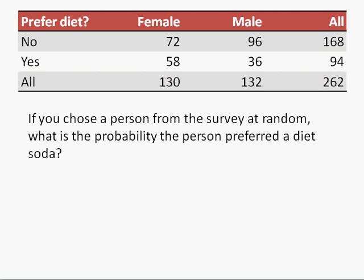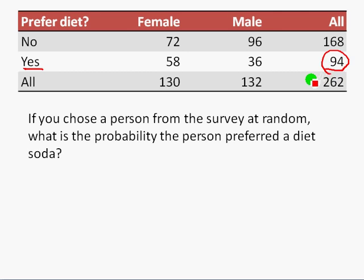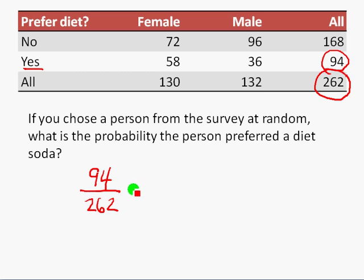Let's look at another question from the same survey. What's the probability that we picked a person at random who preferred a diet soda? We're only looking at people who answered yes, and it's not asking female or male, so we look at the total: 94 people preferred diet sodas out of the 262 total surveyed. Written as a fraction that's 94 out of 262, or as a decimal .3588.